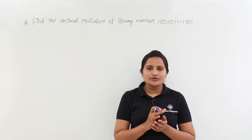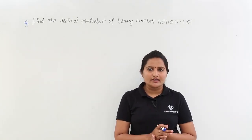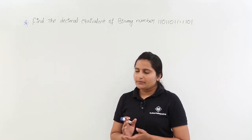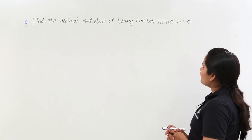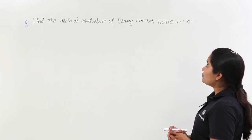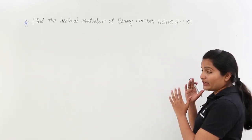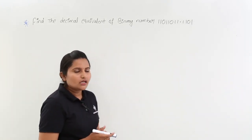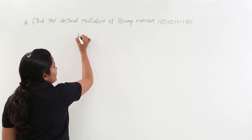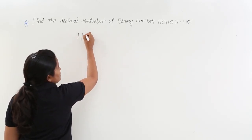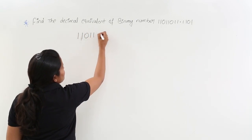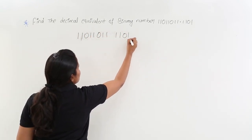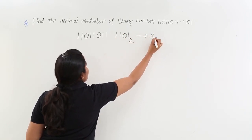In this class we are going to discuss a problem related to the decimal equivalent of a binary number. Find the decimal equivalent of binary number 11011011.1101. This is a very large binary number given to convert into decimal. The binary number 11011011.1101 needs to be converted into its decimal value.